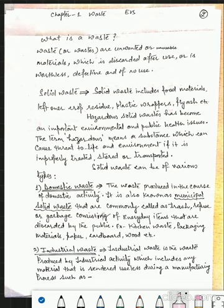First, waste. Now the first question is, what is a waste? Waste are unwanted or unusable materials which is discarded after use or it is worthless, defective and of no use. So, in a simple term, we can define that waste are totally unwanted materials and objects that people have thrown away. It is often called trash, garbage, rubbish or junk.